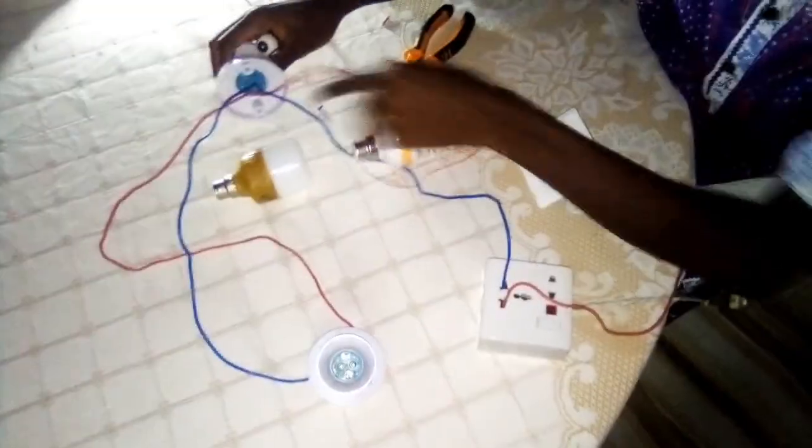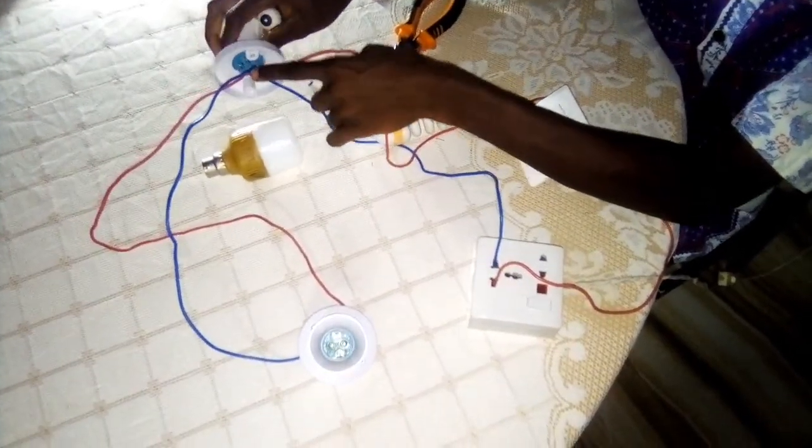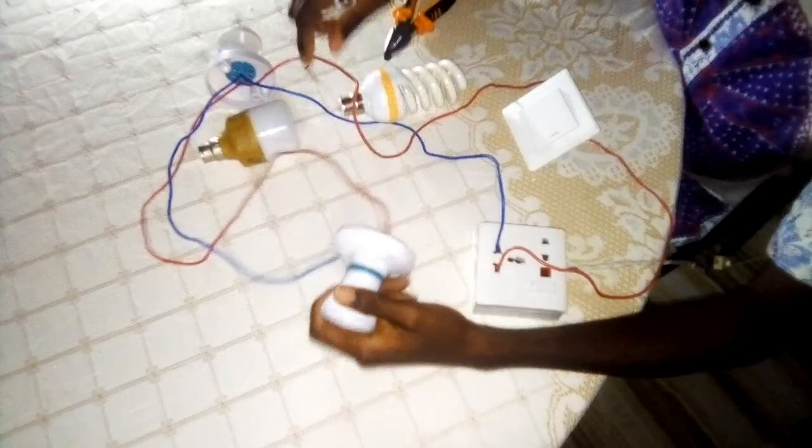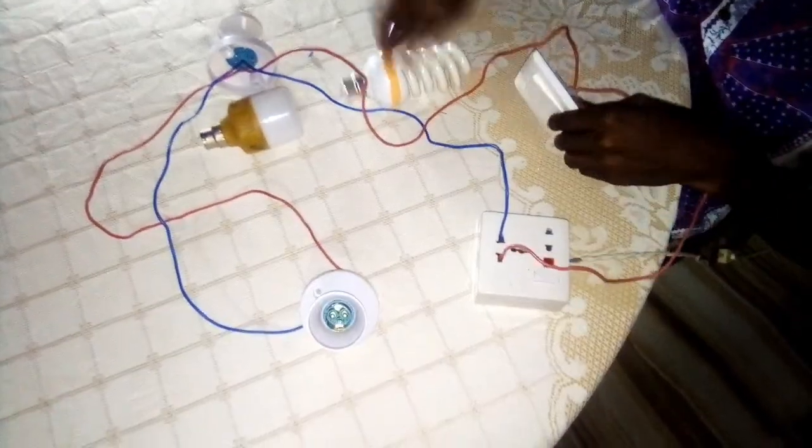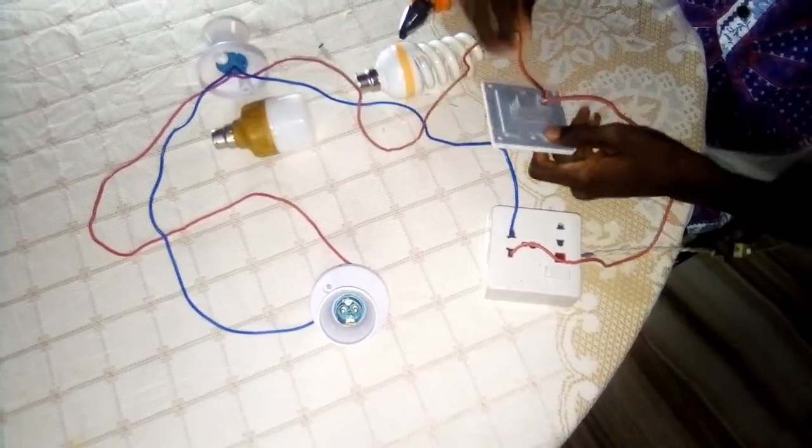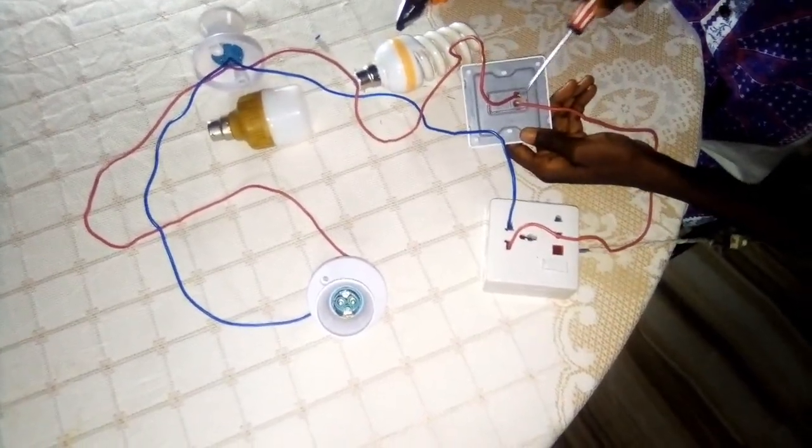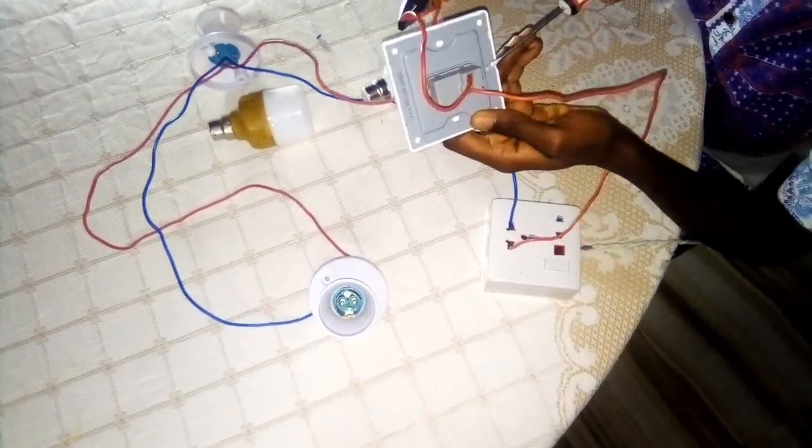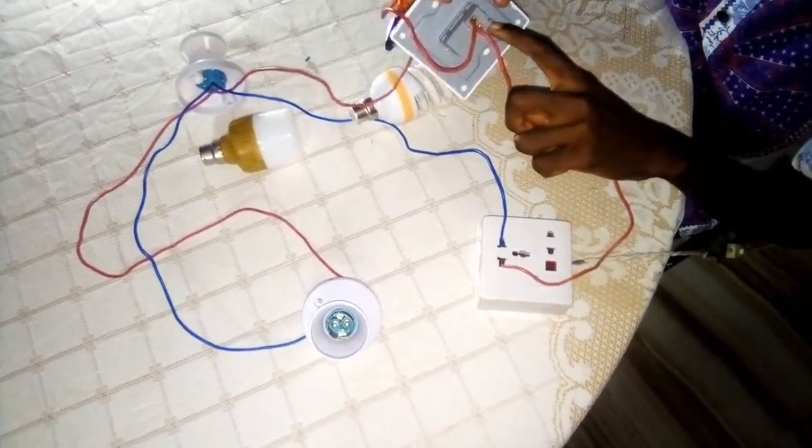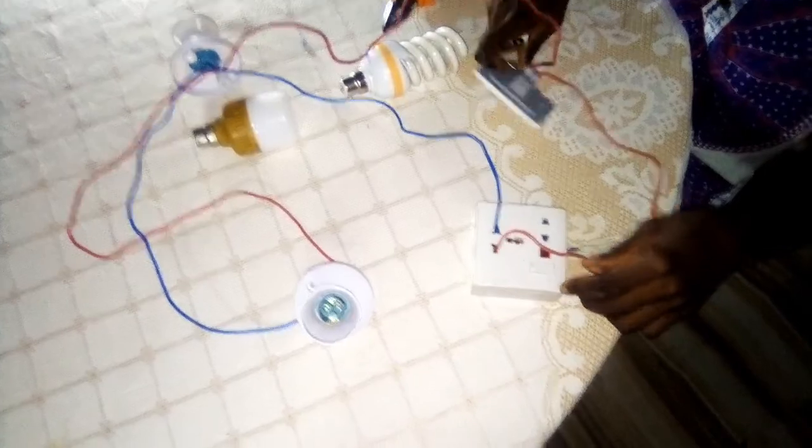As you can see in the connection, there's a cable coming from the second lamp going to the first lamp, and another cable coming from the switch, which is the switch wire, going to the first lamp. And another cable going to the socket, which represents the common, which is going to give the power to the switch.